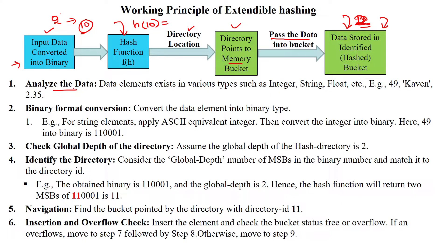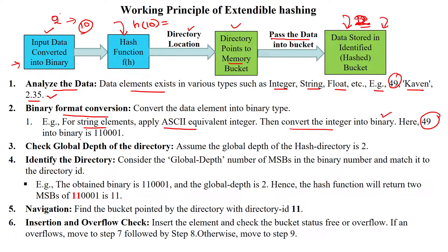The first step is to analyze the data — what data elements exist in the given input. They may be integer, string, float, etc. For example: integer 49, string 'Kevin', and float 2.35. These have to be converted into binary format. For string elements we can use the ASCII value, which is an equivalent integer, then convert that integer into binary. For example, for 49 we convert to binary: 110001.